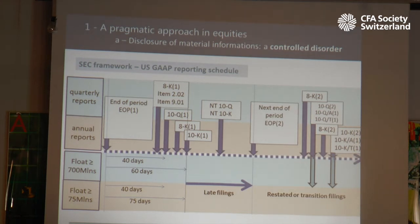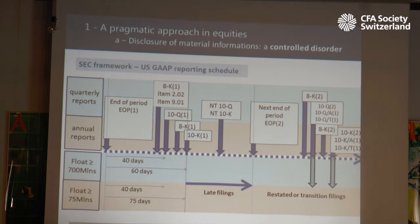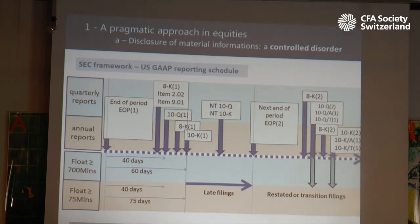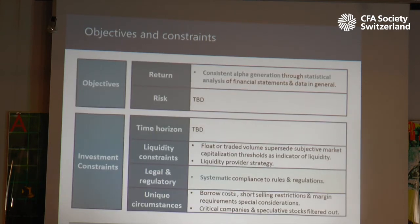8-K filings are followed by the filing of periodic reports — the 10-Q and 10-Ks. If the firm can't file before the deadline, it must notify the SEC through NT 10-K and NT 10-Q filings. I have pictured here two periods, with end of period EOP1 and EOP2. On the second period, we might have restatements of previous filings. We can also have transition reports — the 10-QT and 10-KT filings — whenever there's a change in the fiscal year. Now imagine thousands of schedules like this one, one for each reporting firm, where the end of periods do not necessarily match. That's what we can call a controlled disorder. Going back to our objectives and constraints, we can fill in the legal and regulatory constraints: systematic compliance to rules and regulations.